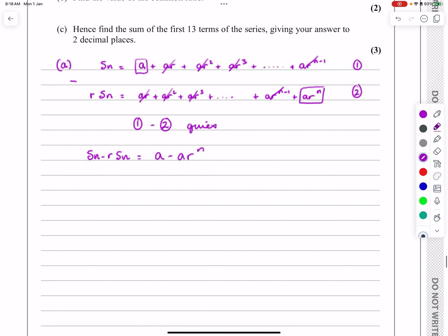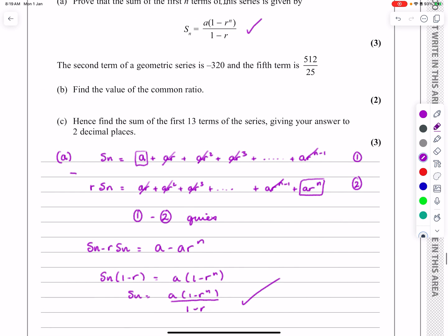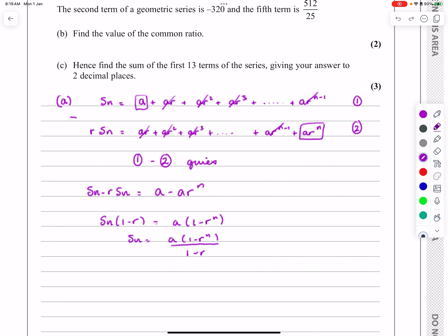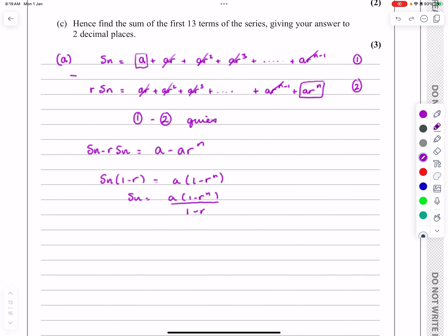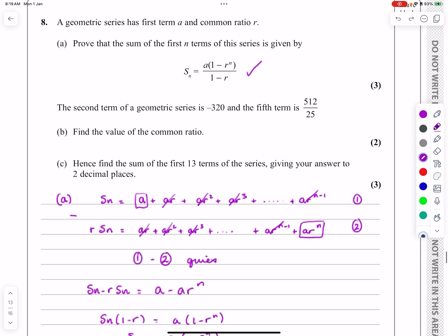From that, we can just factorize both sides, take Sn out of the left-hand side, take a out of the right-hand side, and we get Sn equals a times 1 minus r to the n all over 1 minus r, which is a proof of that top equation. You've absolutely got to go away and learn that. You need to be able to do that without really any thinking at all. I wouldn't expect you to try and work that out in the exam, you just remember the process.